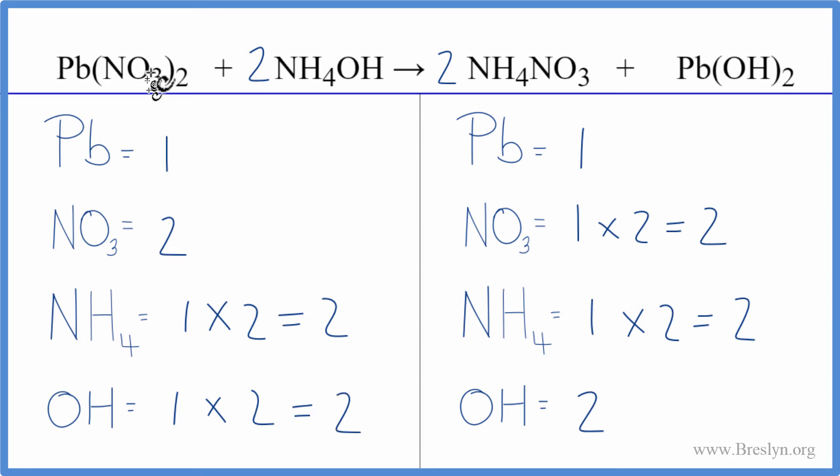So you can see the utility of counting these polyatomic ions as just one thing. As long as you have them here and on the other side, you can count it as one thing. It makes it a lot easier to balance. This is Dr. B with the balanced equation for Pb(NO3)2 plus NH4OH. Thanks for watching.